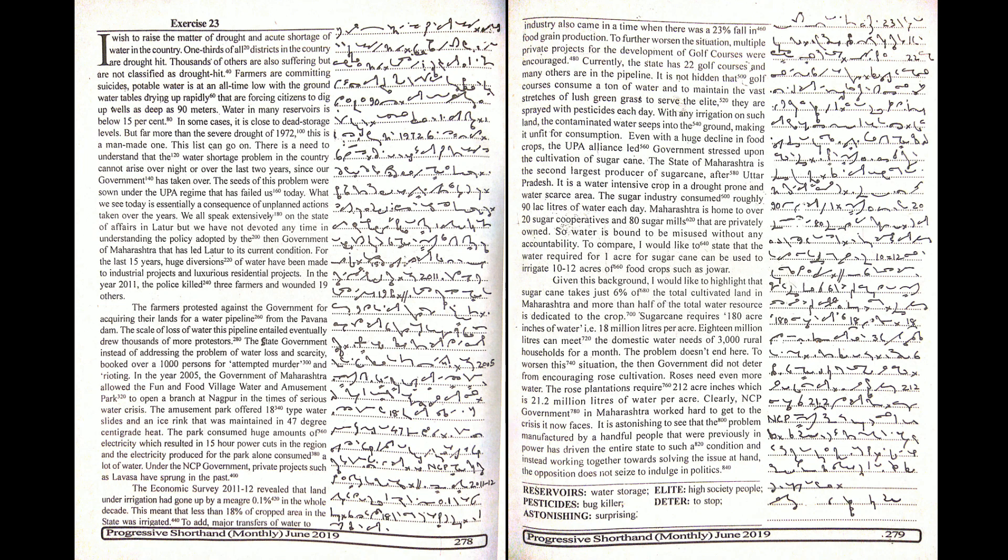Maharashtra is home to 20 sugar cooperatives and 80 sugar mills that are privately owned. So, water is bound to be misused without any accountability.